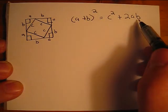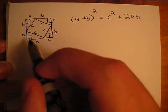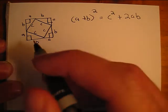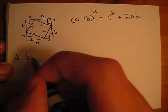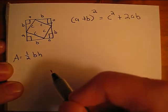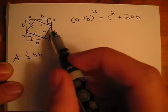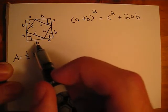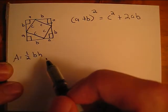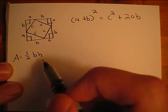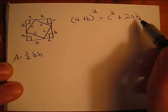Where do we get the 2ab from? We get the 2ab from the formula one-half base times height, which is the formula for the area of a triangle. Since we have four triangles, where the base is b and the height is a for each one, we multiply this formula by 4, which gives us 2ab.